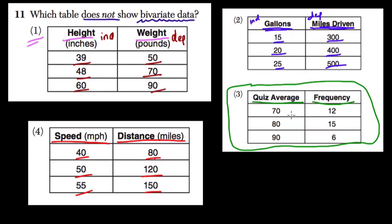Well, that's another variable. But it's still univariate data because, here, the quiz average that you got doesn't depend on the number of people that got that quiz average. The assumption is that everyone's working on their own.